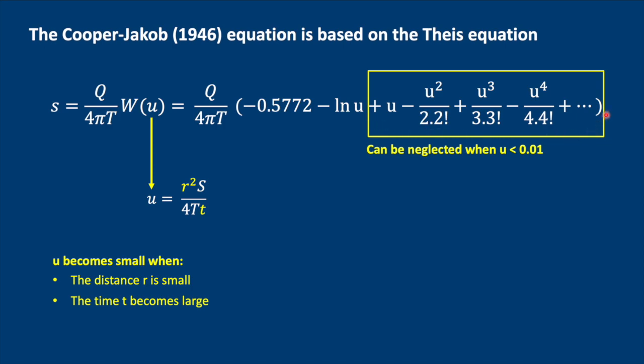Basically we can neglect all this part of the equation. Now what happens when U is not very small? What happens when U is, for example, 0.03? Well then our error is only 1%. This comes from Kruseman and de Ridder, by the way. And you can see that at higher values of U, for example 0.15, we'd have an error of 10%. Now most hydrologists agree that an error of 2% is quite acceptable.